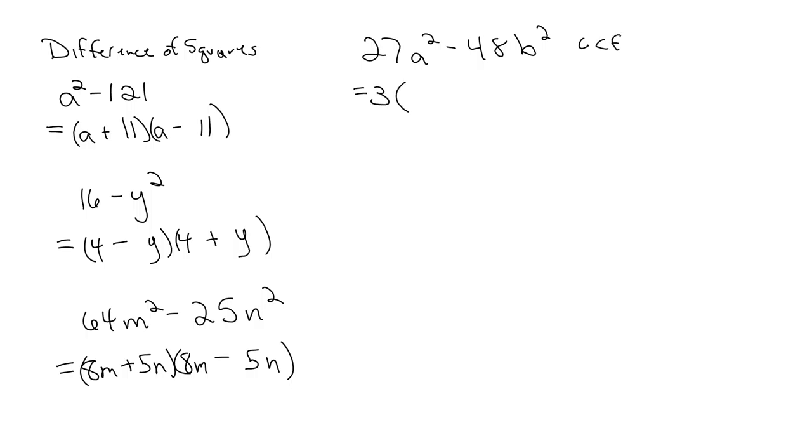So when we take it out, we have 27 divided by 3, that's 9a squared, minus 48 divided by 3, 16b squared. And now we have the difference of squares. Ah, so much nicer. So we have 9 comes from 3 and 3, a squared, a and a. 16 again is 4 and 4. And b squared is b and b. And opposite signs.